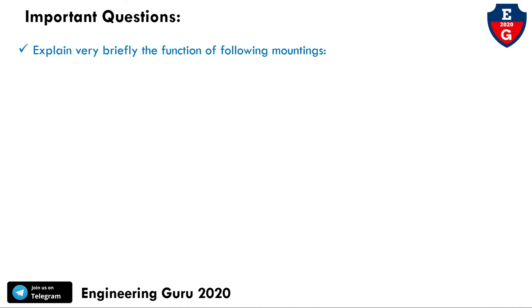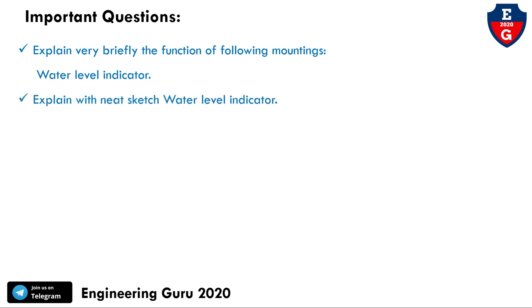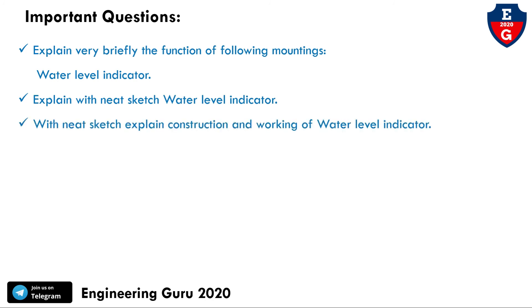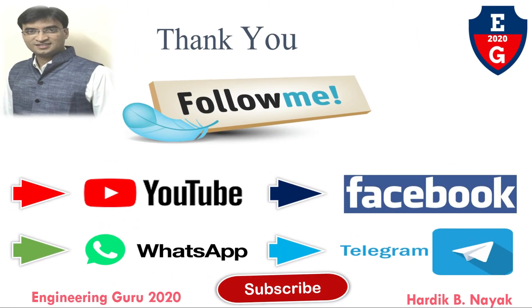Some important questions for the university exam: First, explain briefly the function of the water level indicator as a boiler mounting. Second, explain the water level indicator with a neat sketch. Third, explain the construction and working of the water level indicator. These are the types of questions asked in university exams.